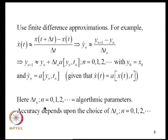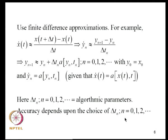The delta TN values are algorithmic parameters. If all are equal, delta T is the only algorithmic parameter. The accuracy of the solution depends on this choice; if delta TN are all equal, accuracy depends basically on the choice of delta T.